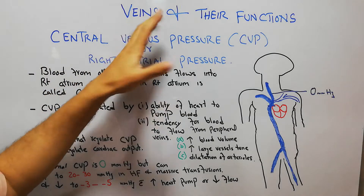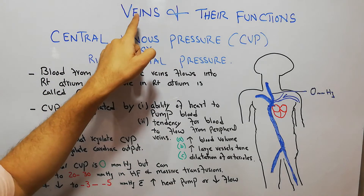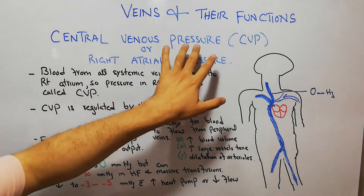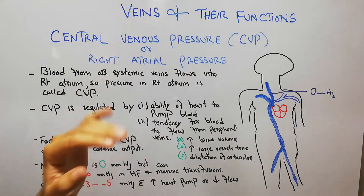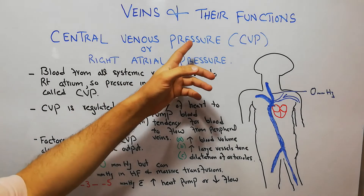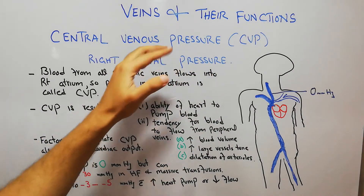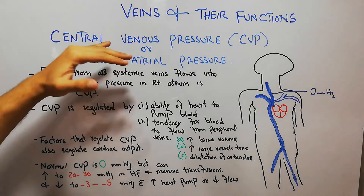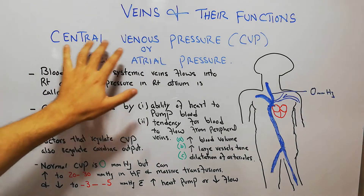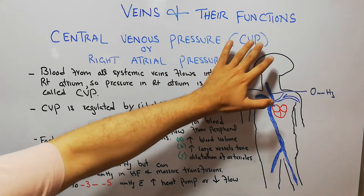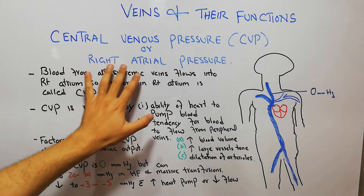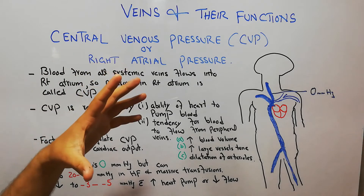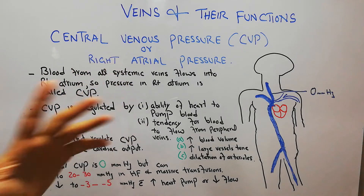Today we are going to start a new series of lectures about the veins and their functions. We are also going to discuss the pressures inside the veins and the factors which are going to increase or decrease the pressure inside the veins. The first topic to discuss is the central venous pressure, CVP, or the right atrial pressure.